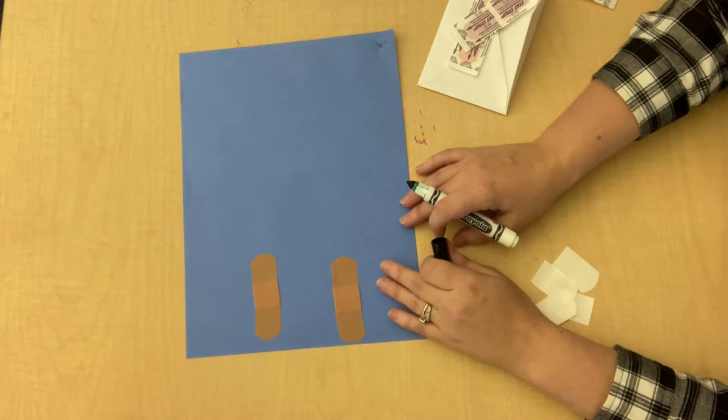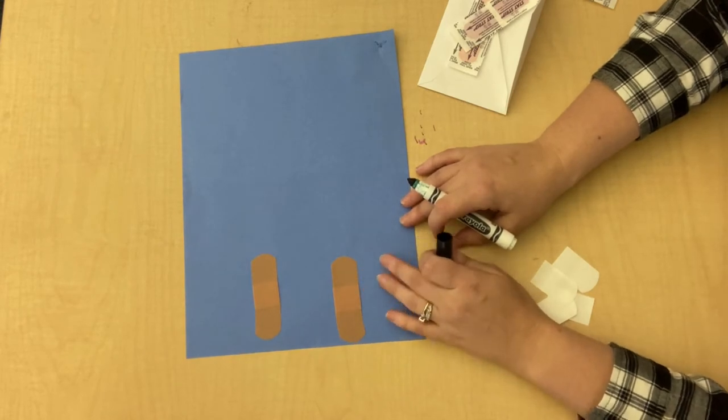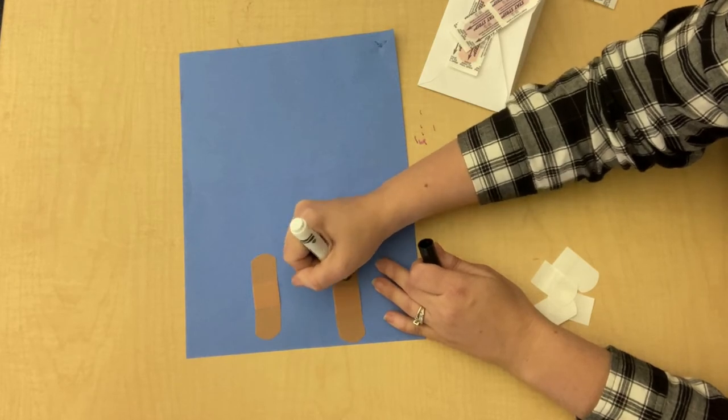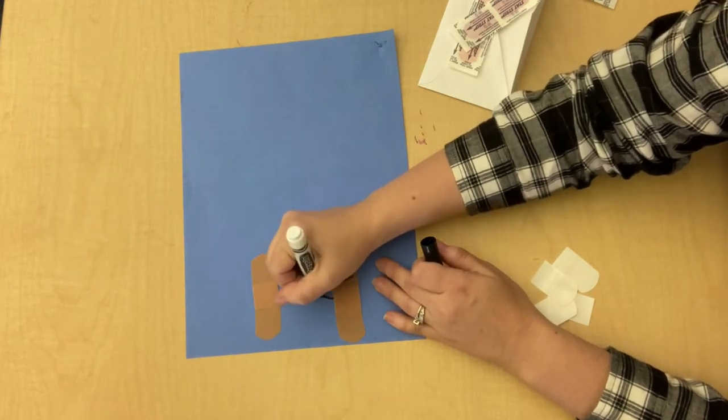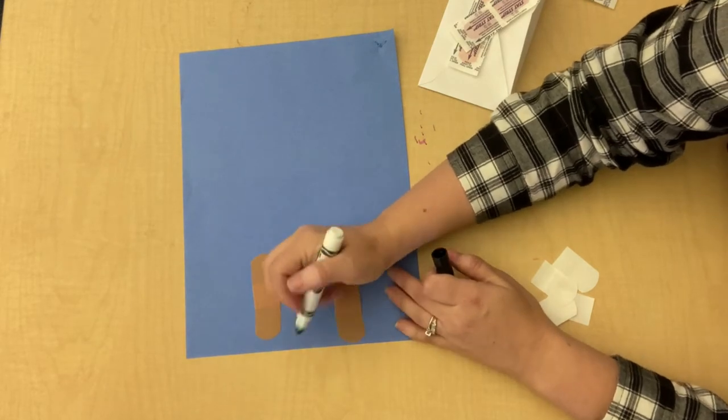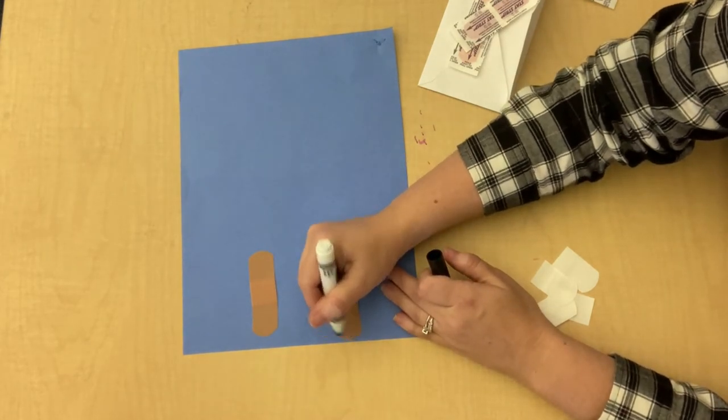And then if you have your marker, we're actually going to draw a face on these. These are going to be like little band-aid people and you can give them some arms. If you want to give them legs, you can give your band-aid some legs.